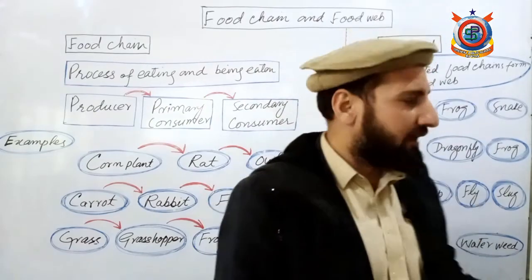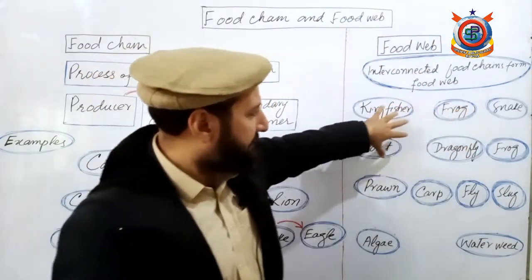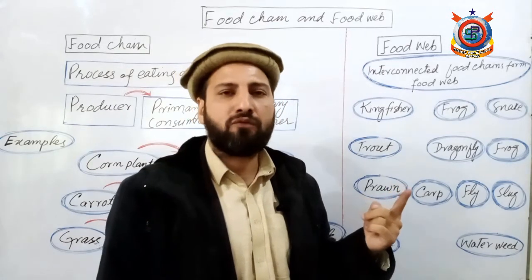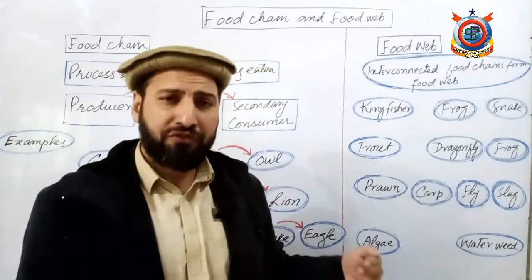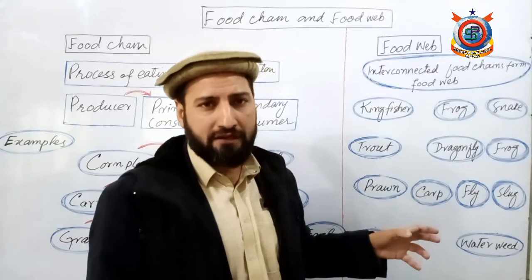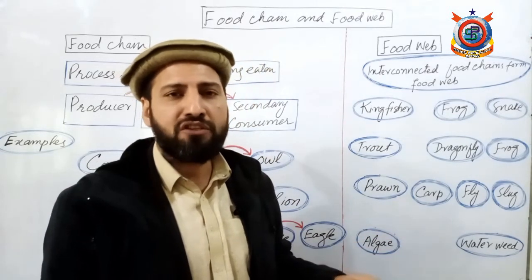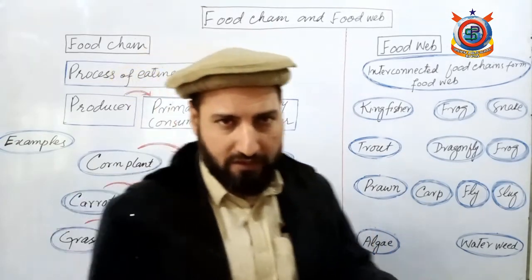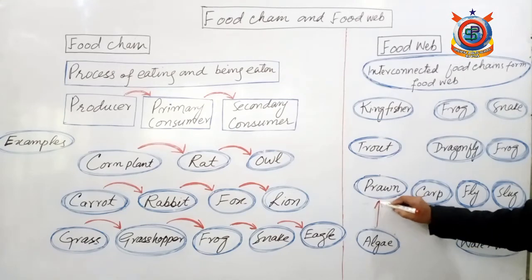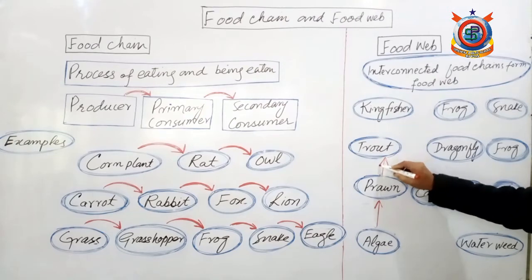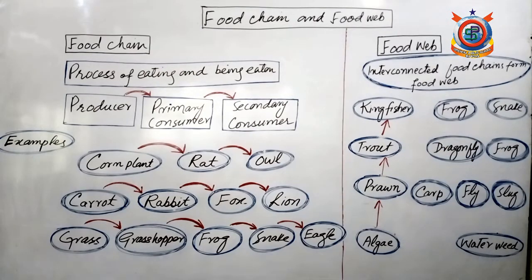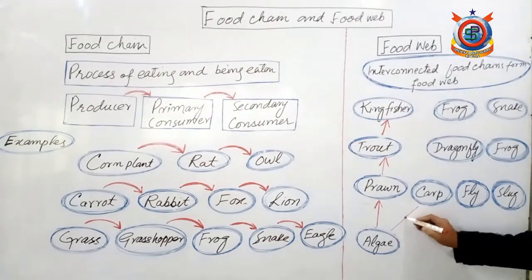Food web basically tells us that organisms at the top level have dependency for food on more than one organism. They don't consume just one organism - they have choices. These choices are successful for them, an advantage, a benefit for their survival. Food shortage doesn't occur - if one food source is unavailable, they consume another. This increases their survival chances. For example, prawn feeds on algae, trout fish consumes the prawn, and kingfisher consumes the trout fish.